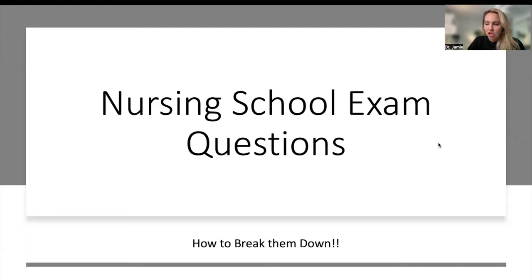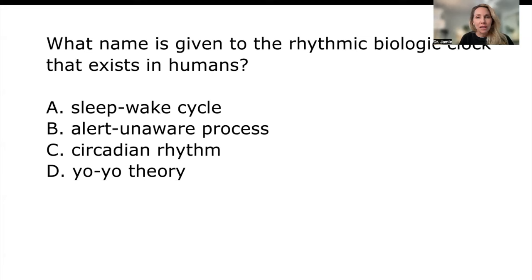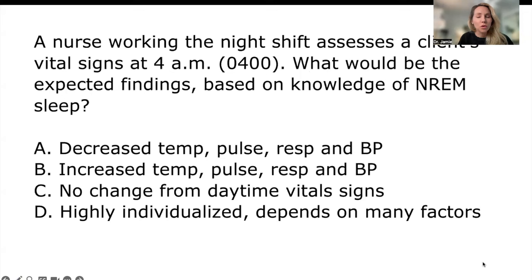Let's jump into it. First question: what name is given to the rhythmic biological clock that exists in humans? The choices are the sleep-wake cycle, alert-unaware process, circadian rhythm, and the yo-yo theory. This is an example of Bloom's taxonomy at the remembering level — if you know it, you know it. The answer is circadian rhythm.